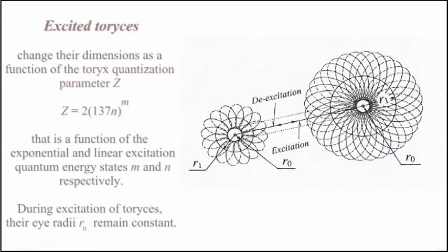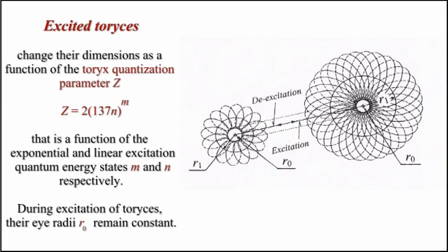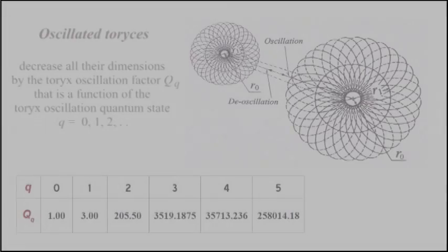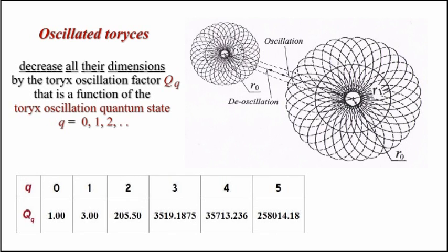Excited Toreases change their dimensions as a function of the Torese quantization parameter Z, which is a function of the exponential and linear excitation quantum energy states M and N respectively. During excitation of Toreases, their I radii R0 remain constant. Oscillated Toreases decrease all their dimensions by the Torex oscillation factor Q sub Q, which is a function of the Torex oscillation quantum state Q.